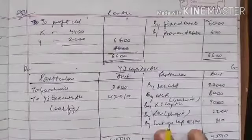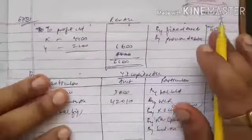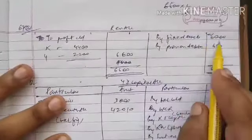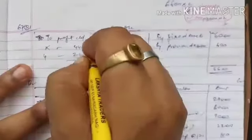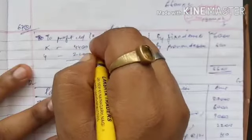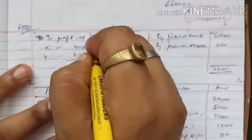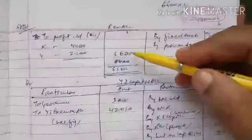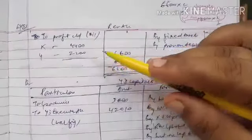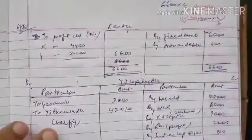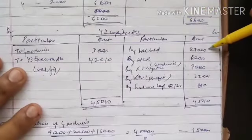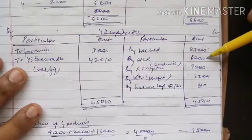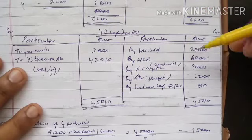First we prepare the revaluation account. Fixed assets enhancement of 6,000 and provision of 600 — total 6,600. We divide this in ratio 2:1, giving 4,400 and 2,200, totaling 6,600.